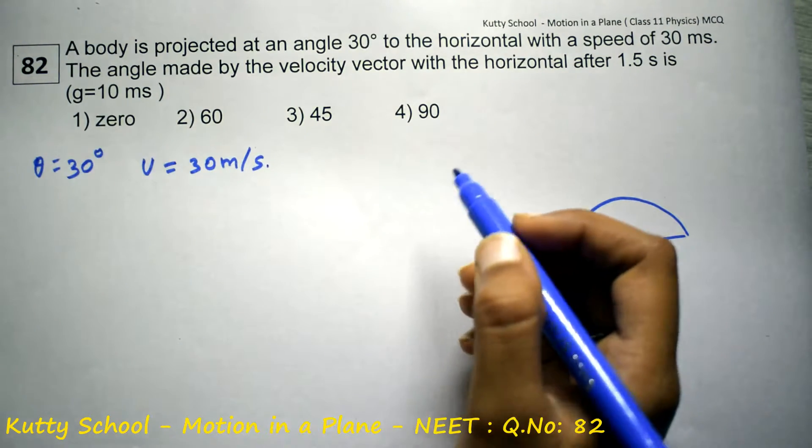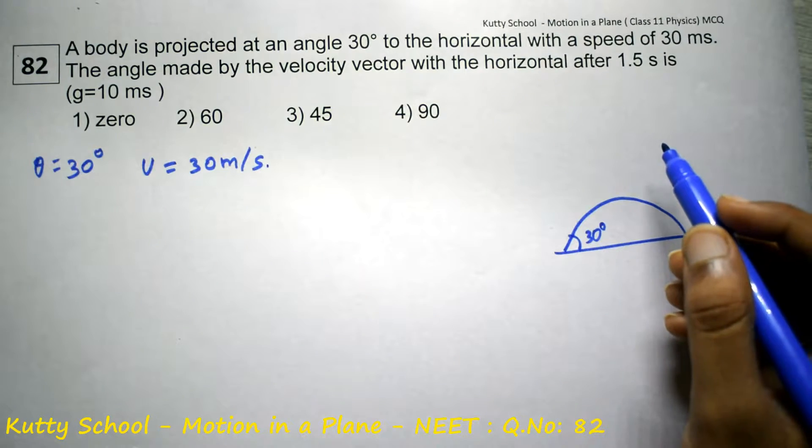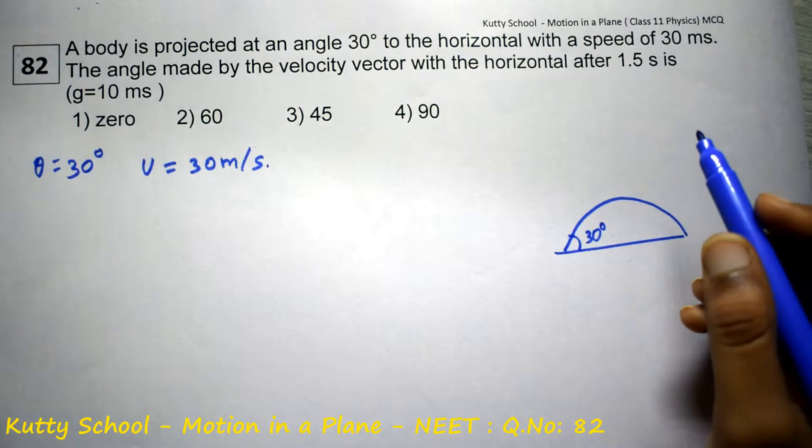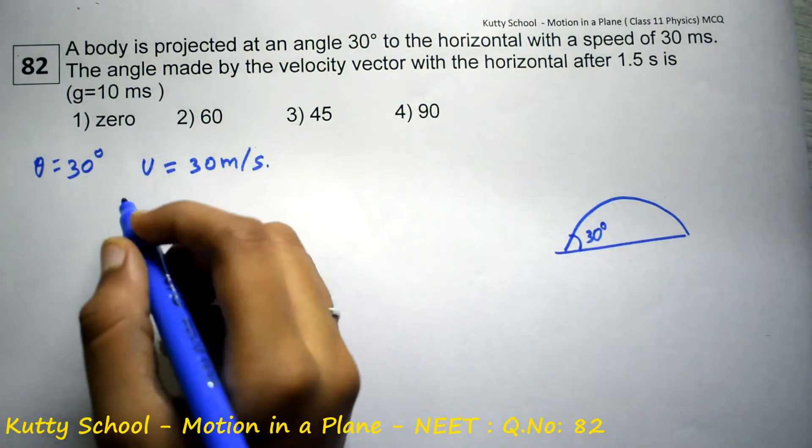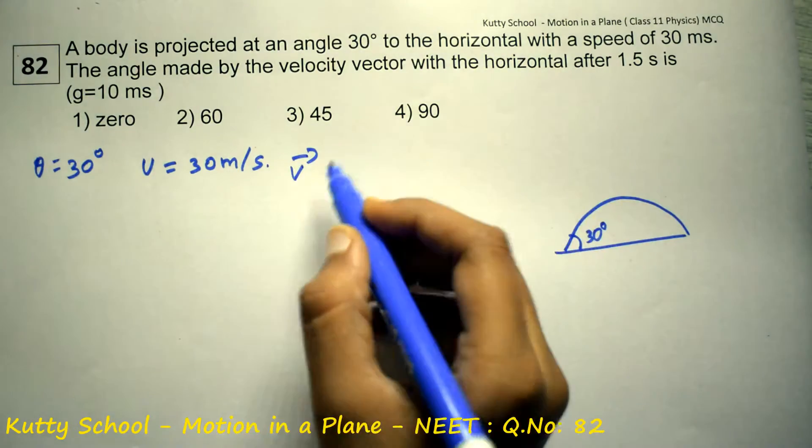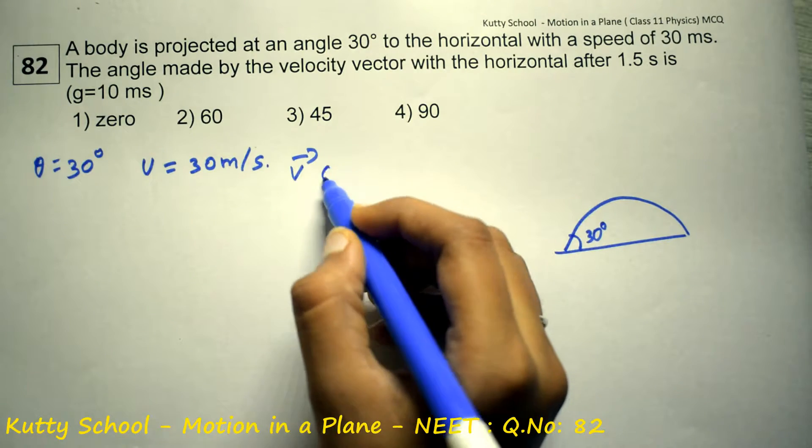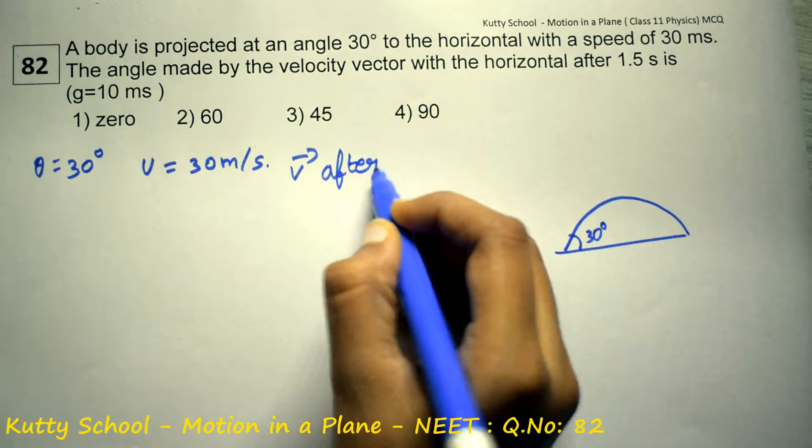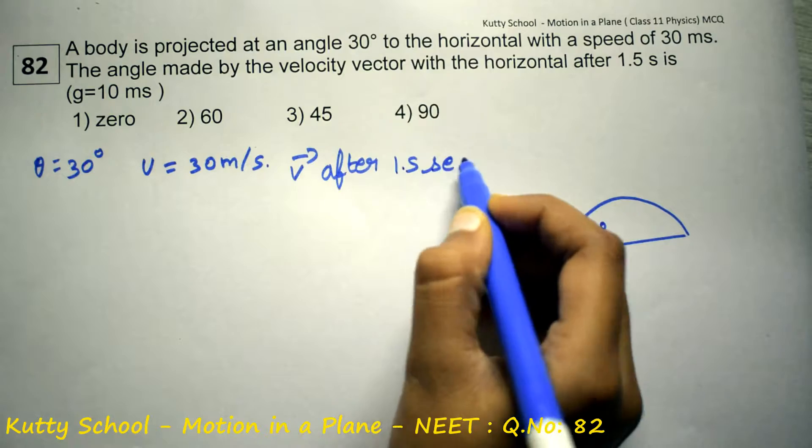The angle made by the velocity vector with the horizontal after 1.5 seconds. So after 1.5 seconds is equal to what?